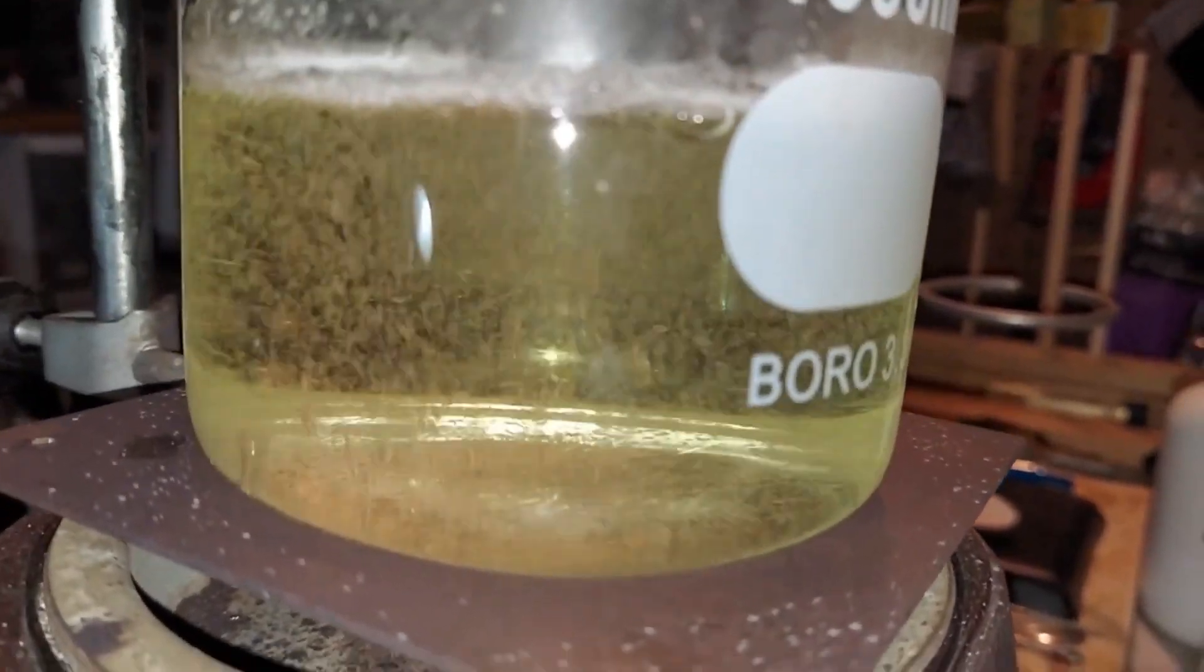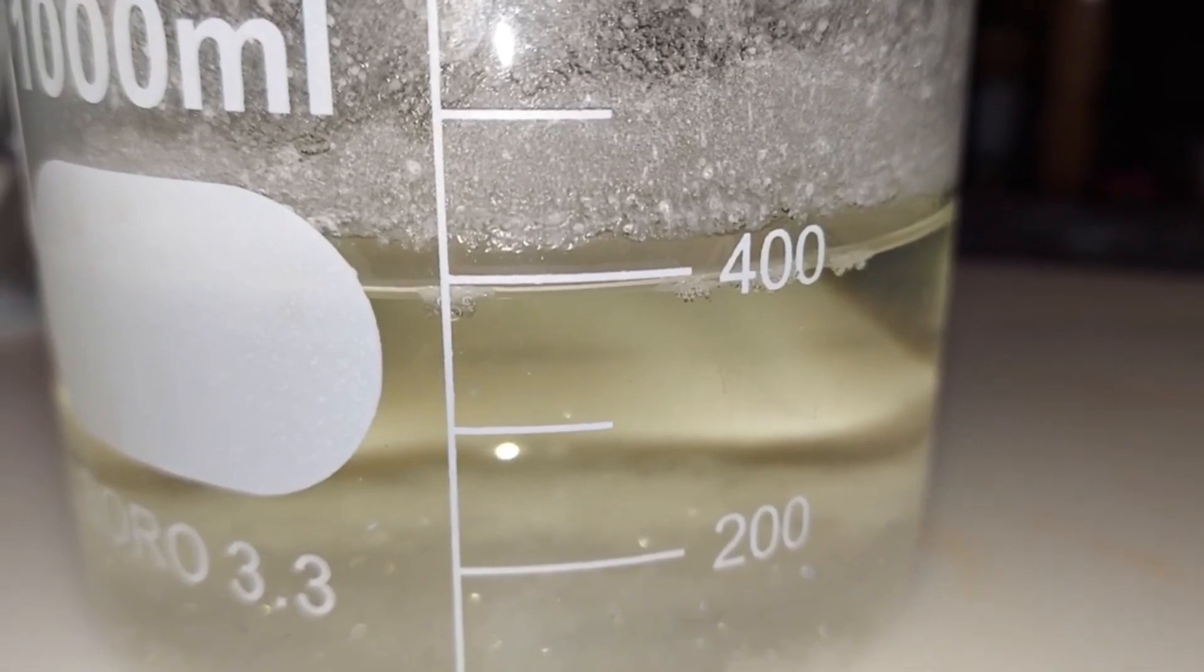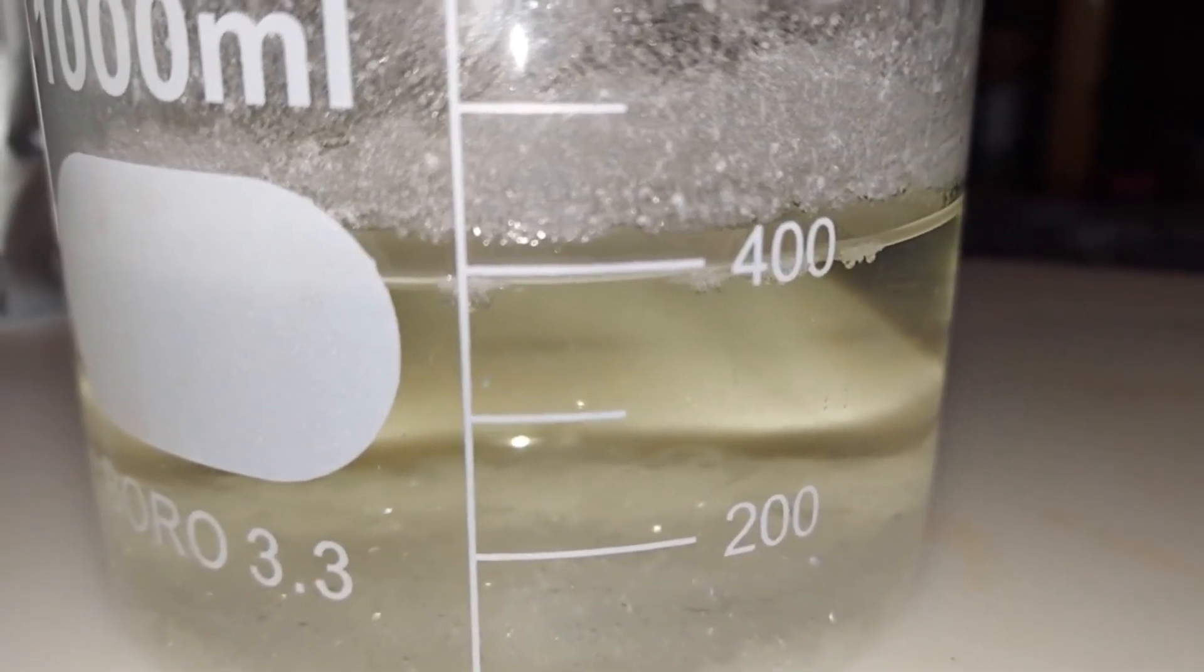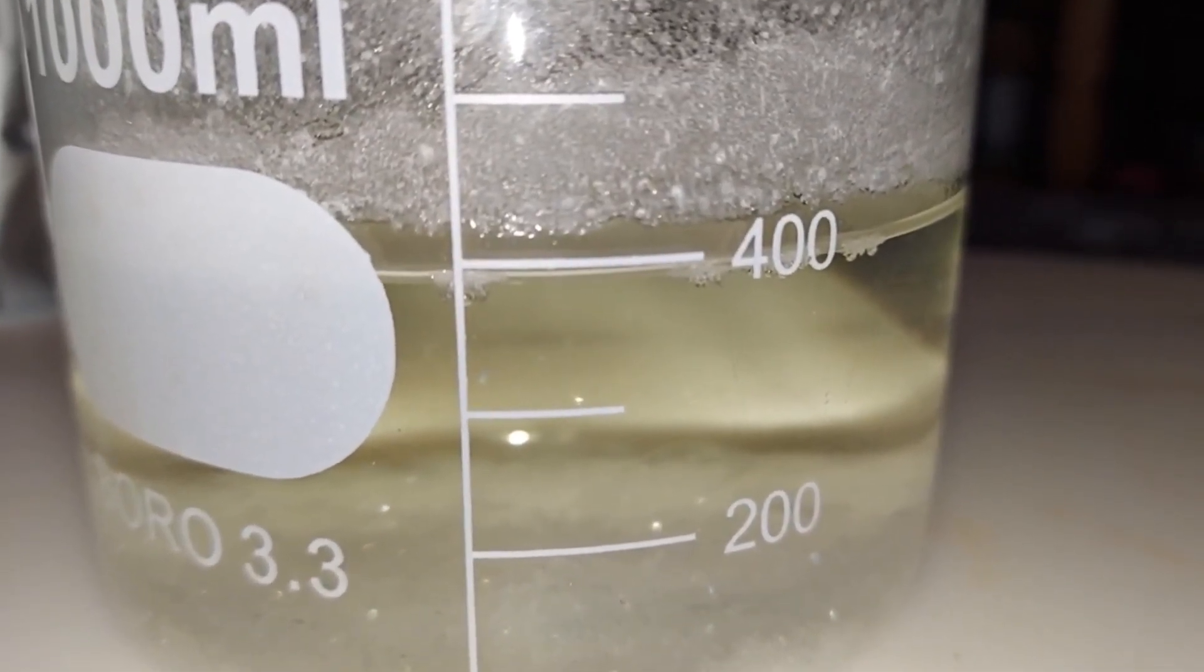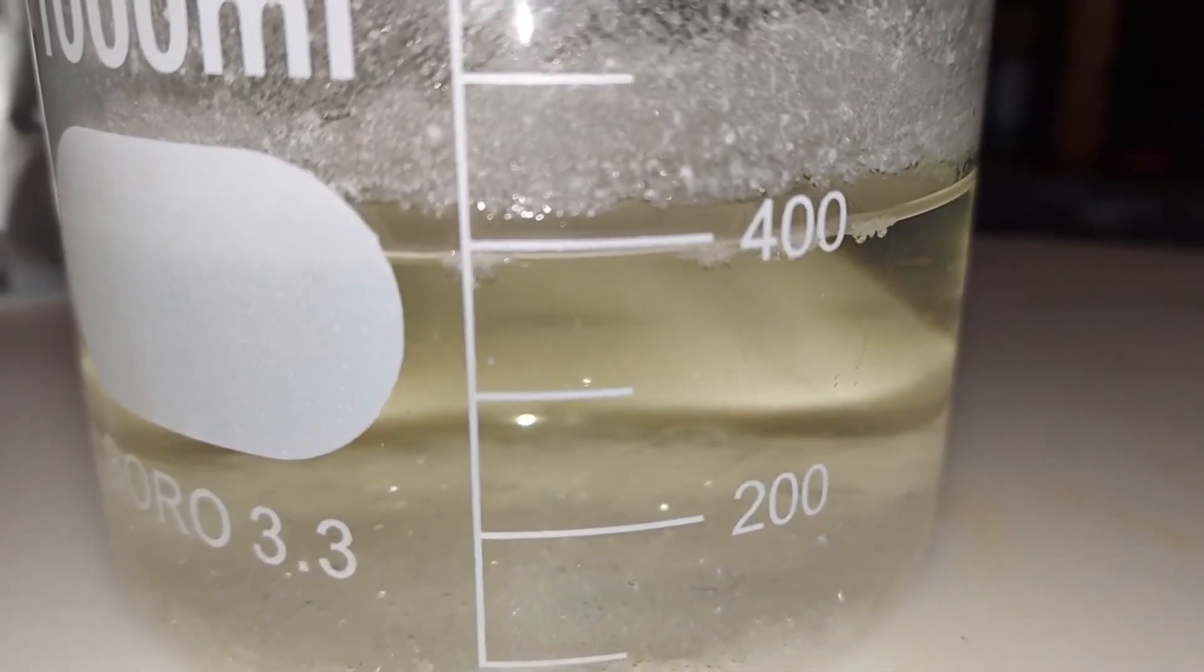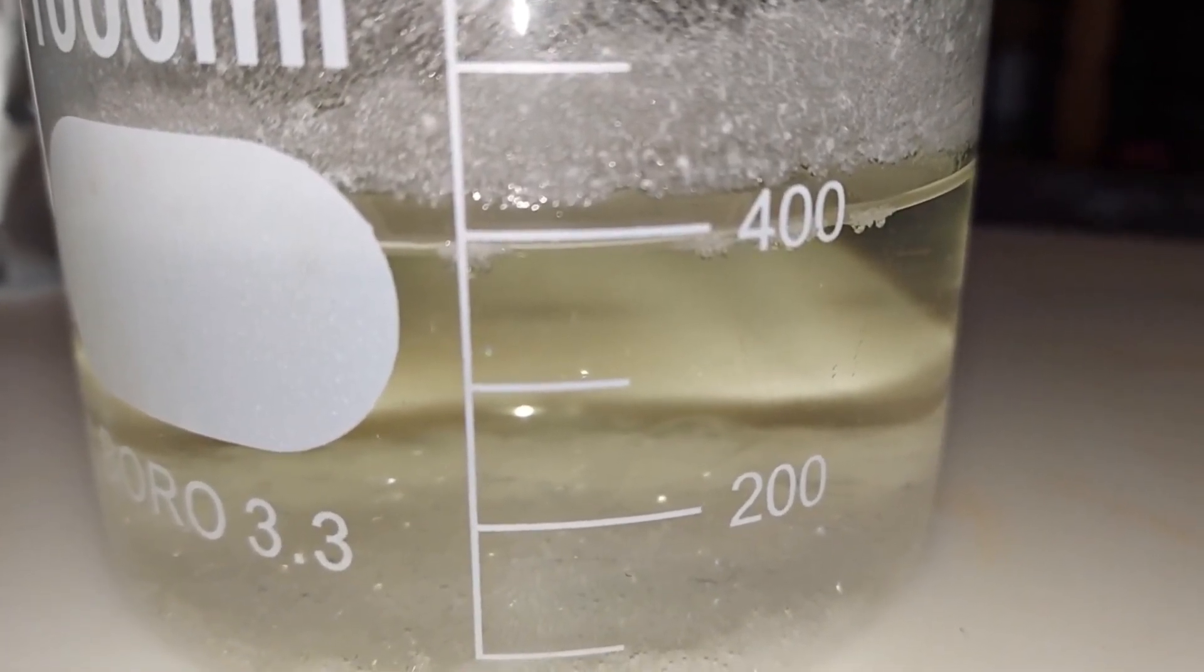The boiled bleach solution cooled down on its own, and because of that I lost maybe another 100 milliliters or so, but that's okay. We got 400 mls here, and that means the solution of KCl or potassium chloride needs to be the same amount.